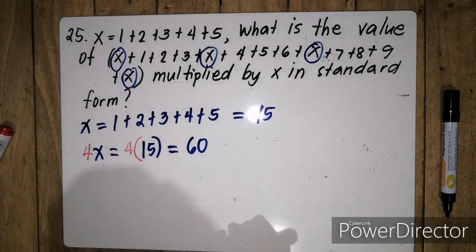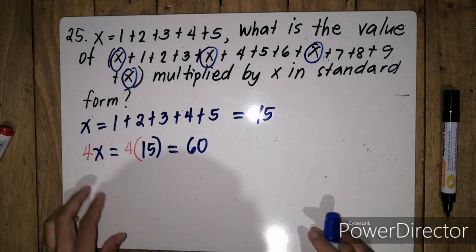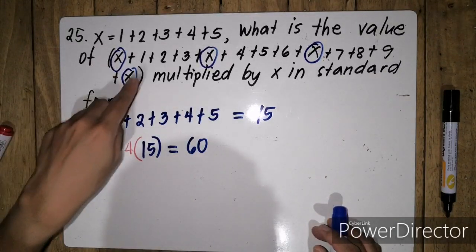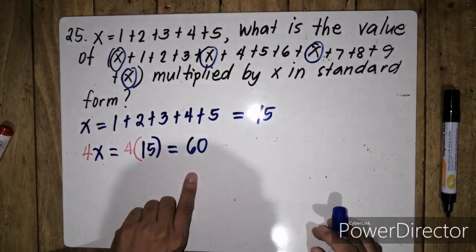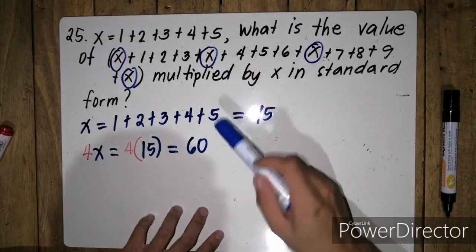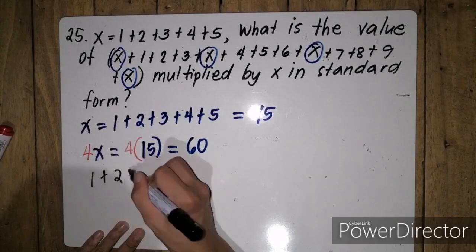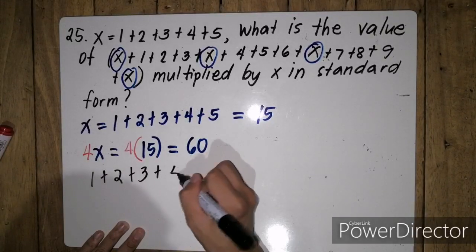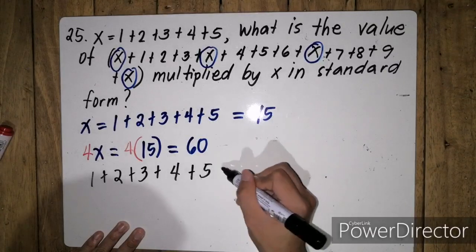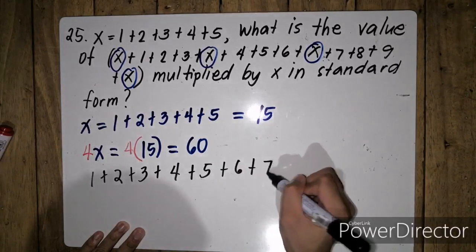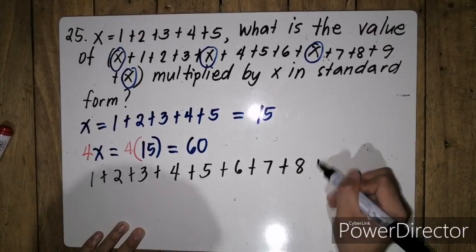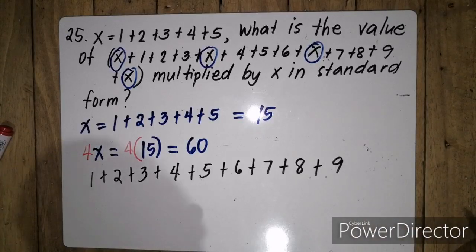So we know now that pag in-add natin yung 4x, we have 60. So ang natitira na lang na i-add natin ay 1, 2, 3, 4, 5, 6, 7, 8, and 9.